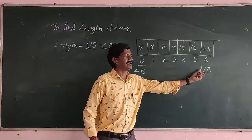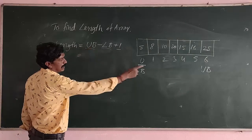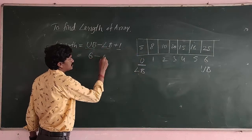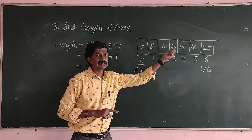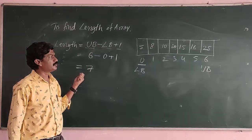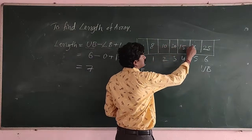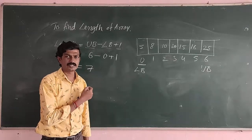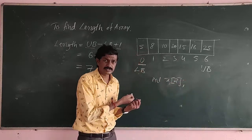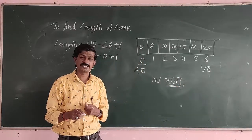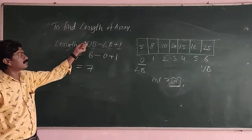Now we know the Lower Bound and Upper Bound. We calculate the total elements using the formula. Upper Bound is 6, Lower Bound is 0, so: 6 minus 0 plus 1 equals 7. The length of this array means we are allowed to store 7 elements. For example, integer x of 7, where 7 describes how many elements we are about to store in that array. This is called the length, calculated as Length = Upper Bound minus Lower Bound plus 1.